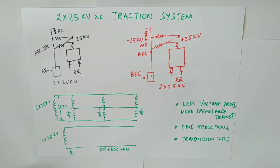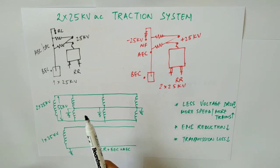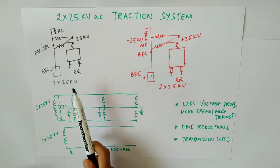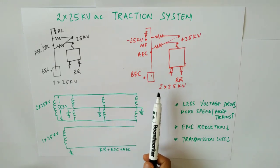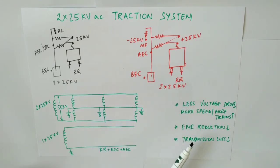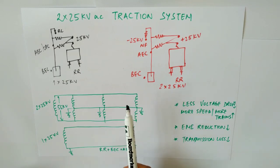Hello everyone, I welcome you all to my YouTube channel. In this lecture we will understand the 2×25 kV traction system. I have covered the 1×25 kV traction system in lectures 2 and 3 of my traction system series. First we will understand the difference between 1×25 kV and 2×25 kV, then the benefits, and after that the types of transformer connections in the 2×25 kV system.